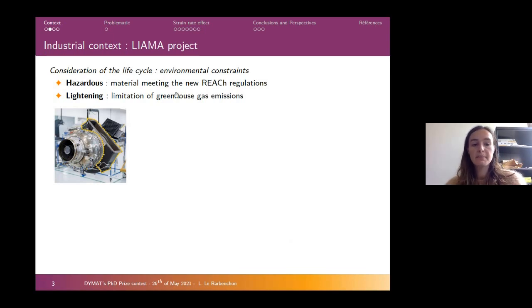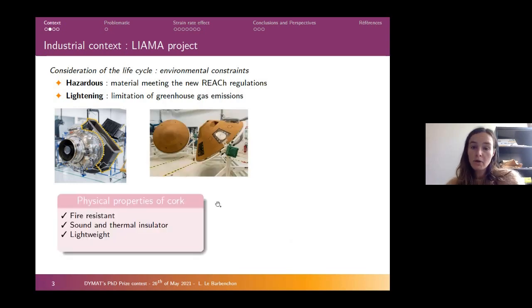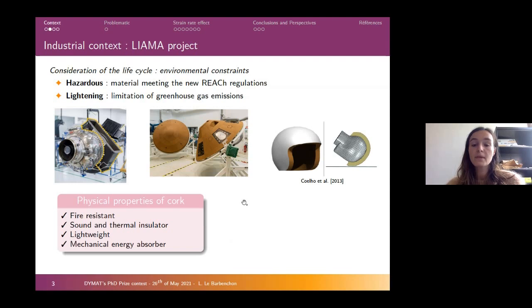For example, in my thesis we were interested in the air entry of a power unit of a helicopter, and cork materials were considered because this material is fire resistant, is a sound and thermal insulator, and is quite light. Furthermore, this material is also a good mechanical energy absorber.